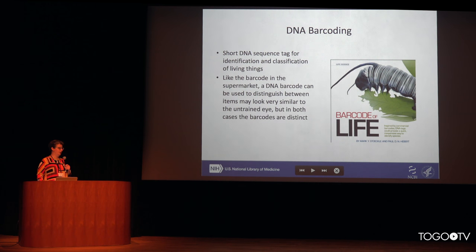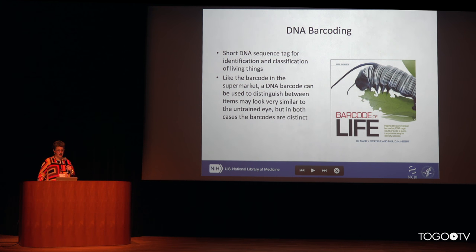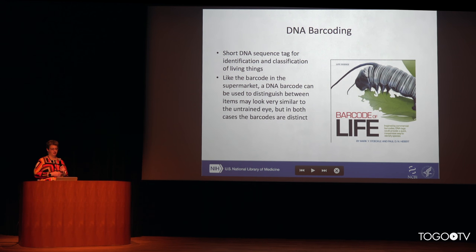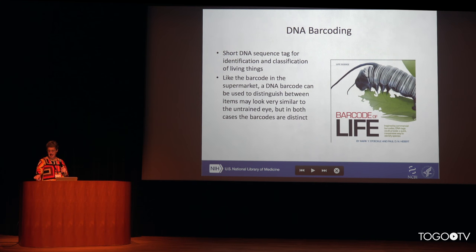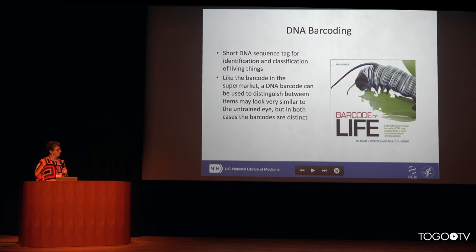I'm going to talk about a project we've been involved with for the past 10 years or so — the Barcode of Life Project. It was found that you could take a small bit of sequence from most organisms, from all animals — a mitochondrial gene sequence — and sequence 700 base pairs of it, and be able to identify species based on that little 700 base pair sequence. This is analogous to the barcode you see in supermarkets, where you could determine what an item is. For instance, you would know it's an Evian water based on the fact that it has a barcode on it.